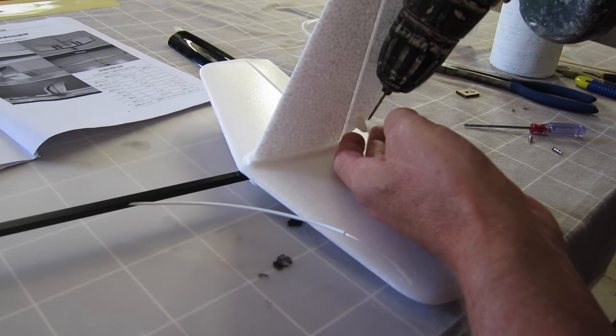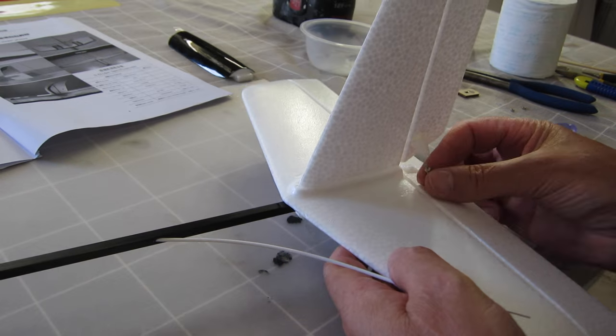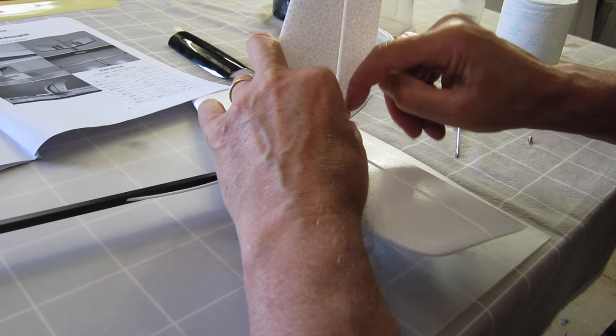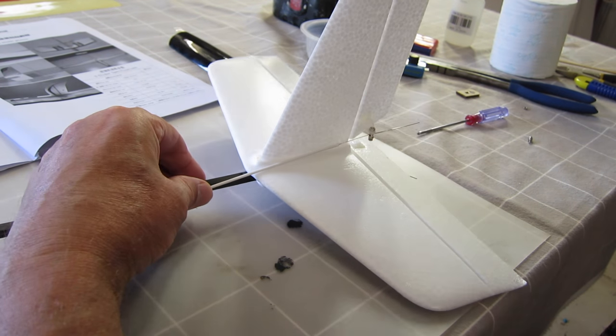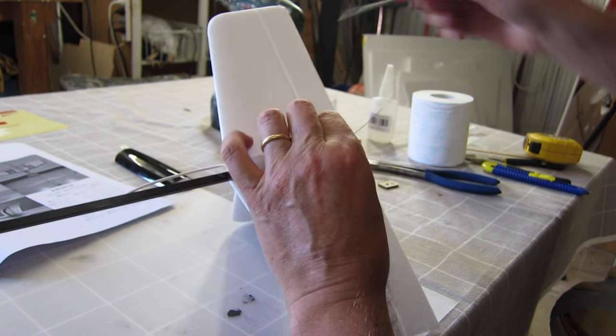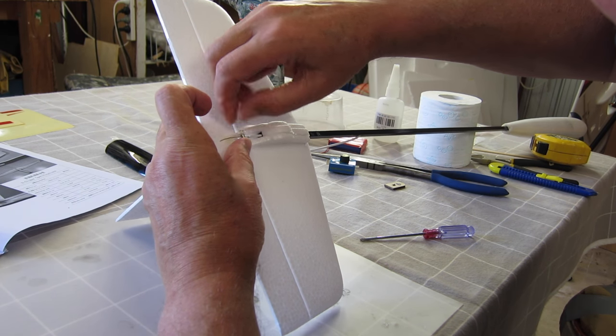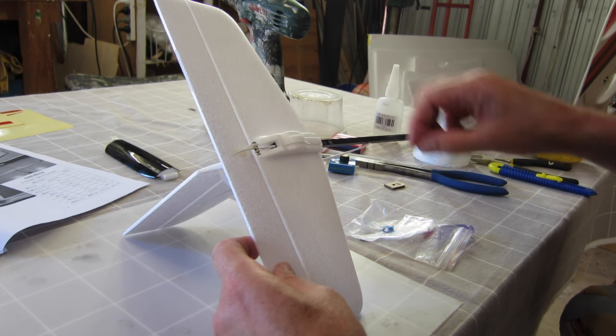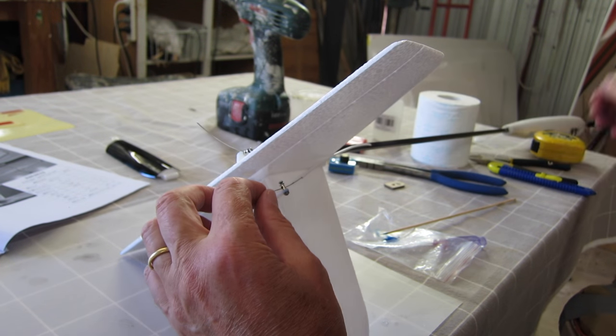Now I need to drill out the holes for the linkage adjusters. I'll lock tight these as well. Well, in theory that's done, but I need to clip these off, these are too long.